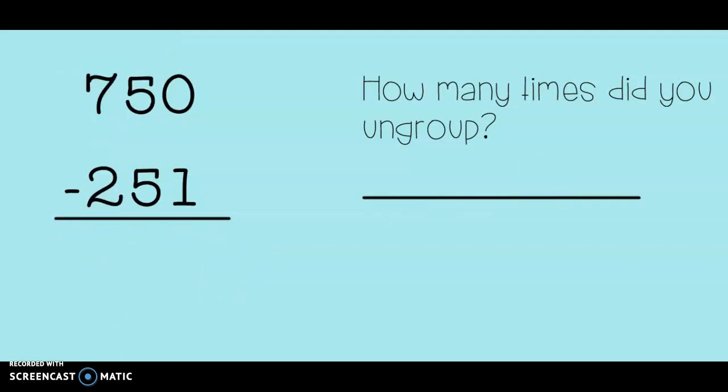And the last practice problem here today for our video. 750 minus 251. Let's take a look. Over in the ones place, we have 0 minus 1. That means I had none, and I need to give 1 away. Can I do that? No, I can't. So I need to go over to the tens to get 10 more ones. 10 minus 1 gives me 9.